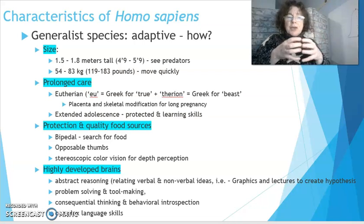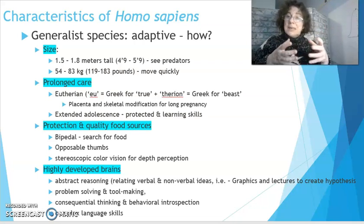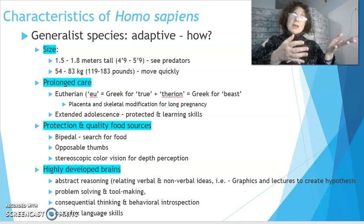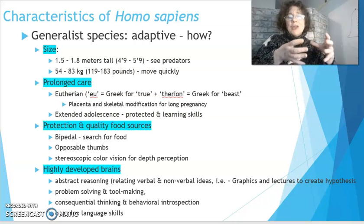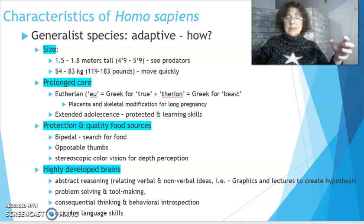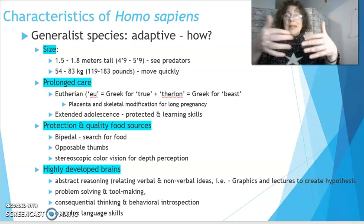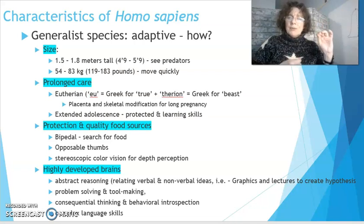For prolonged care, we have a eutherian characteristic — 'eu' meaning true, 'therian' being Greek for beast. Eutherian relates to use of a placenta for reproduction and the skeletal modification that allows for prolonged pregnancy in females. That eutherian characteristic sets up a prolonged care scenario, which leads to a prolonged adolescence of learning skills and how to relate and behave in a group environment — very helpful for protecting and supplying the entire group.